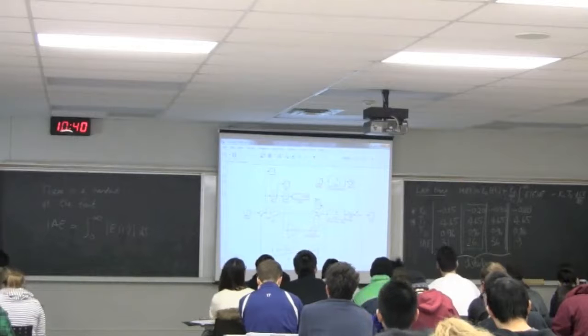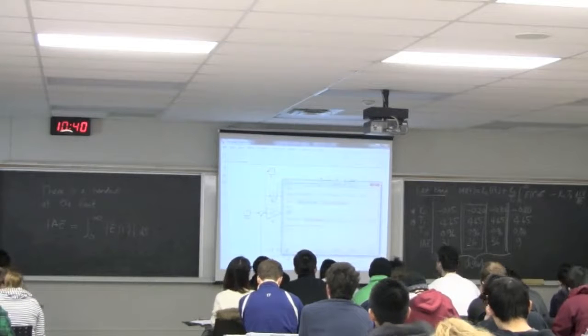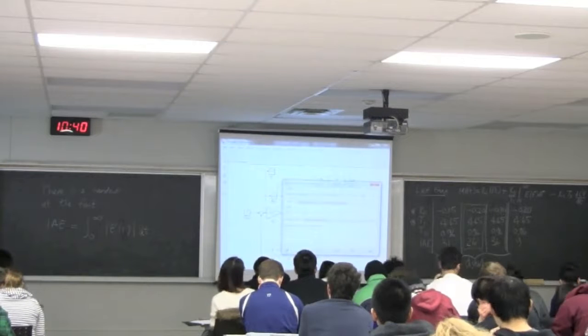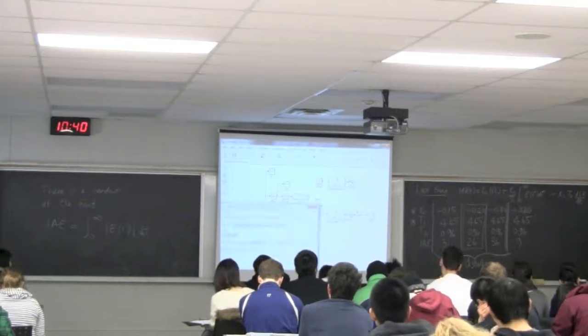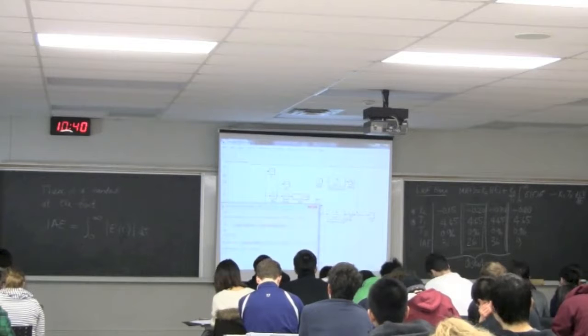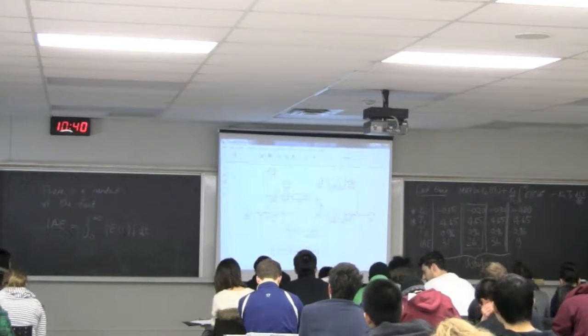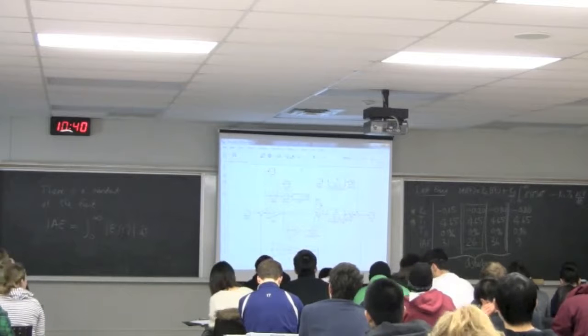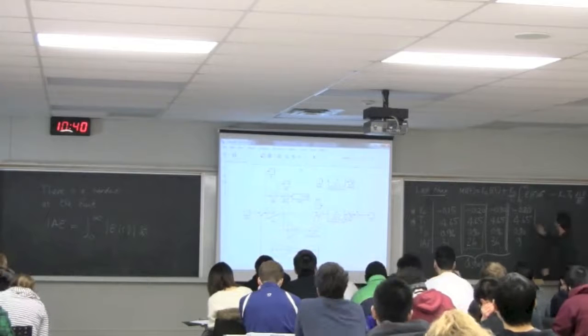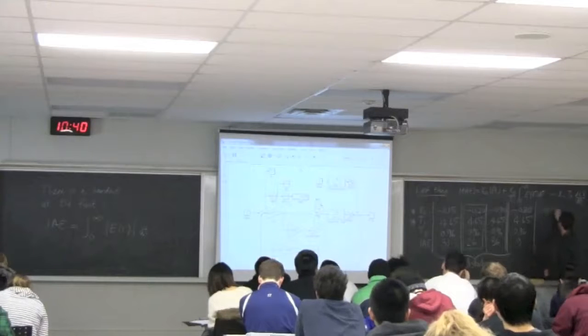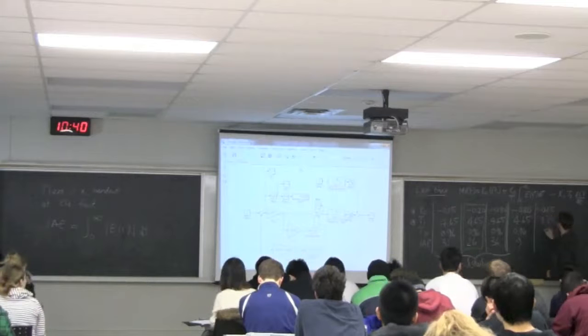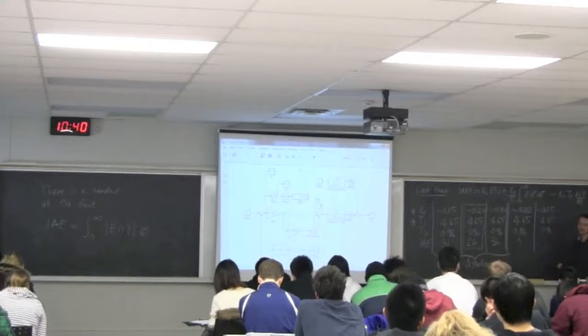So let's add that to our table now. Now we're considering set point changes. KC is minus 0.2. We use our starting point from where we were before. TI is at 4.65, TD at 0.96. And the IAE is nine units. So let's just go see what happens if we go up in KC magnitude. So let's try 0.25. Minus 0.25. And now we're going to run that simulation.